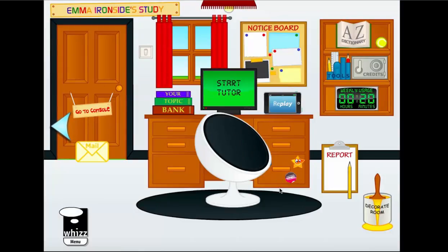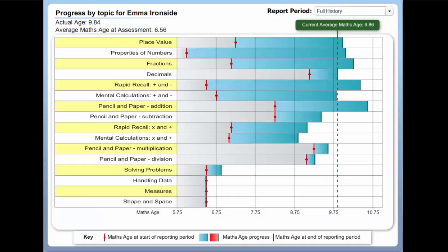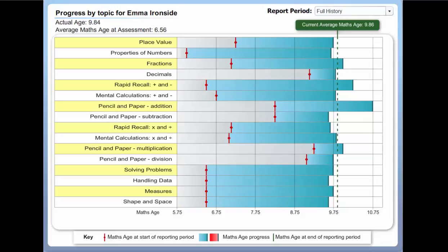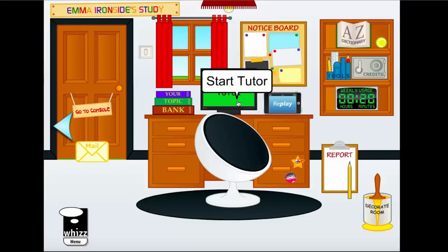When Emma first came onto MathWiz, she would have been directed to start the Tutor and would have received an initial diagnostic assessment — a pure test without any animations — which enables us to go topic by topic through each individual area to find out Emma's strengths and weaknesses. Then through the tutoring journey, we apply specific lessons directed to Emma's unique ability. To have a look at one of those lessons, I'm going to go on to the Replay section now.